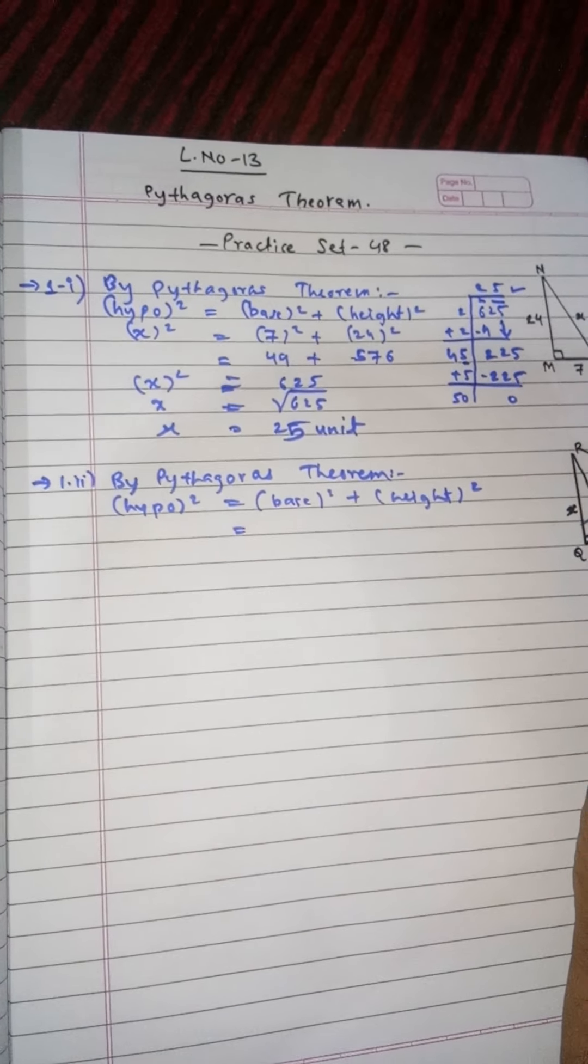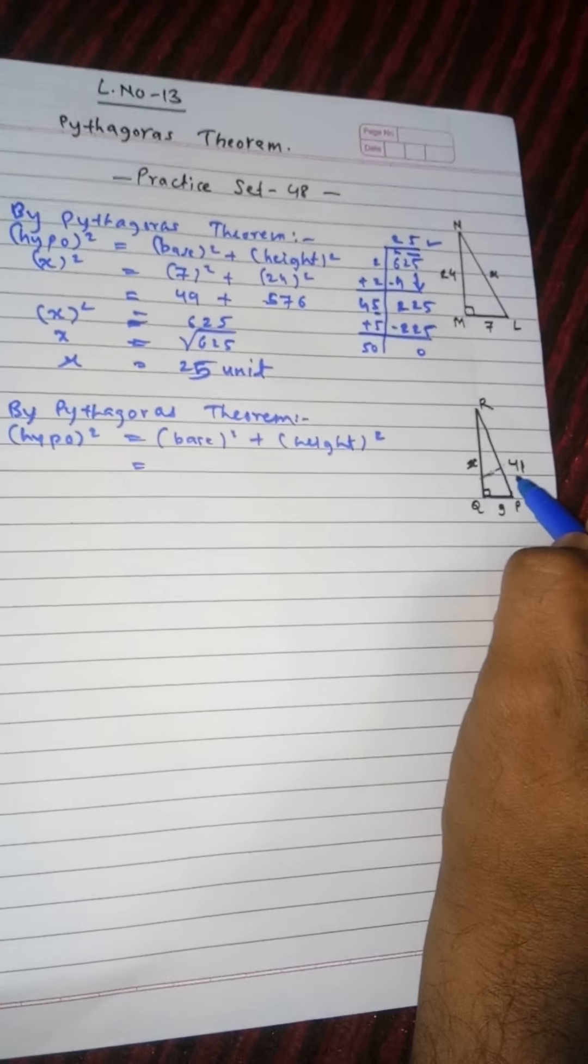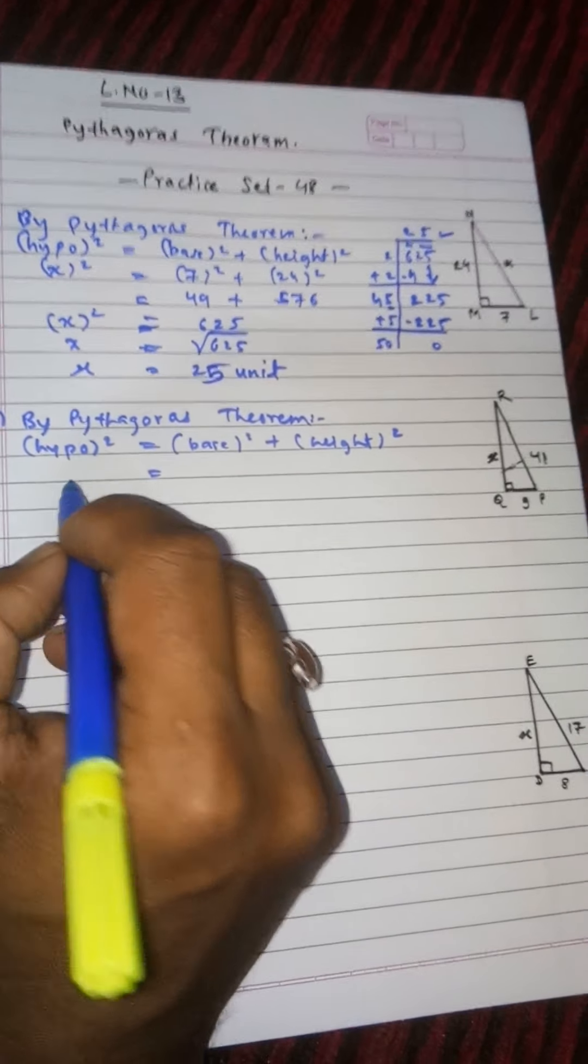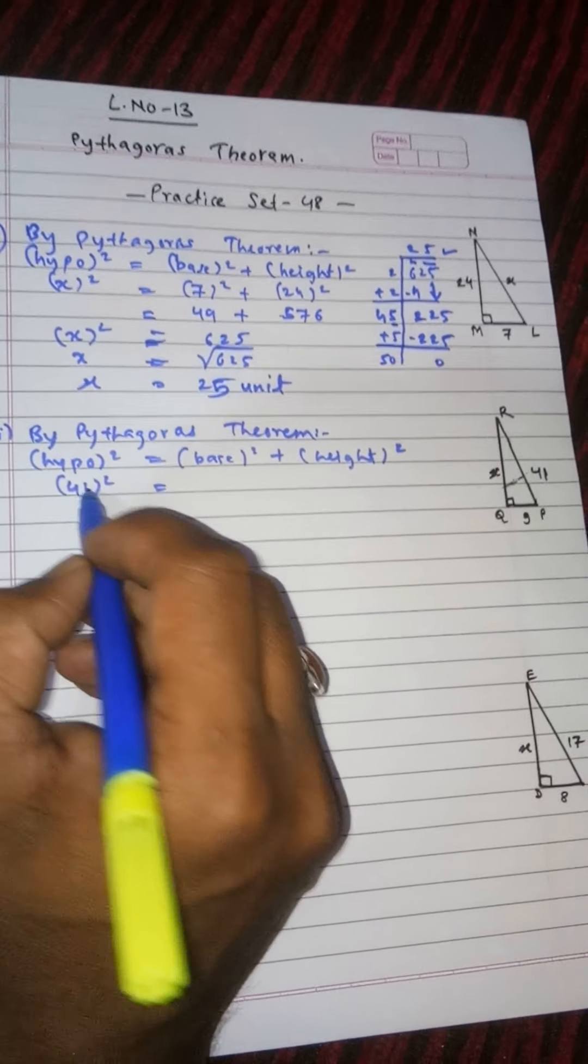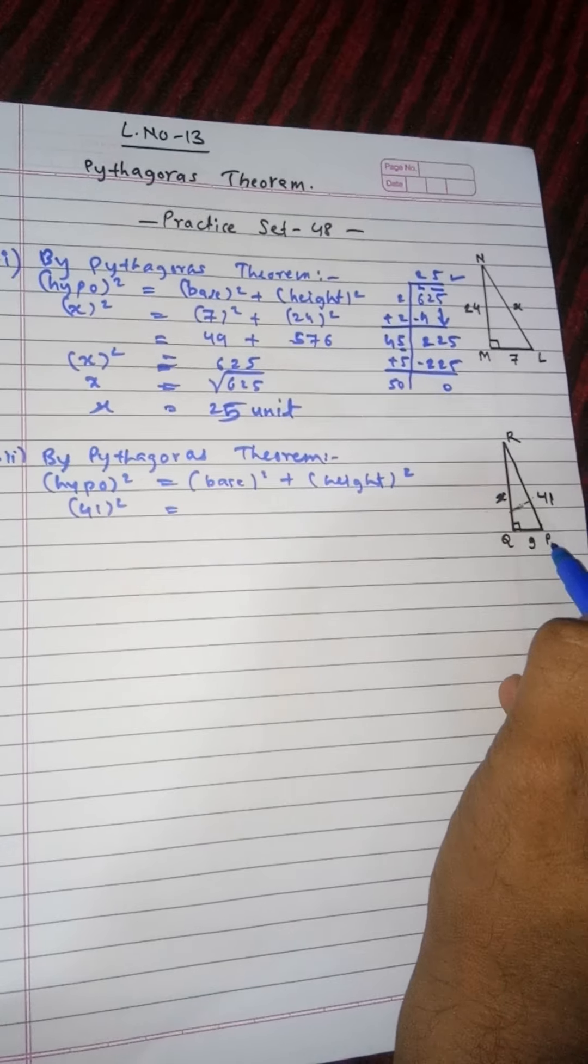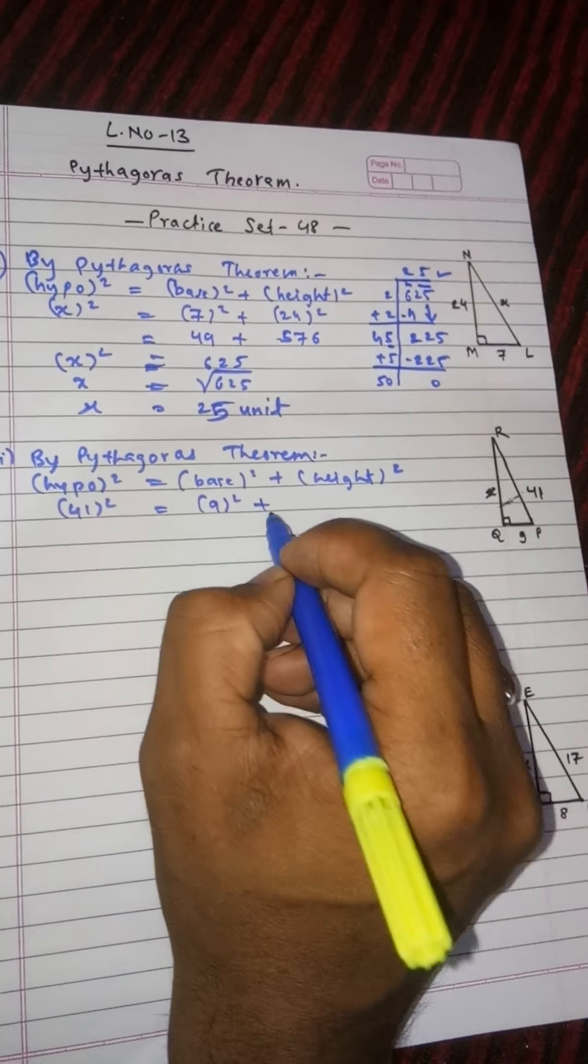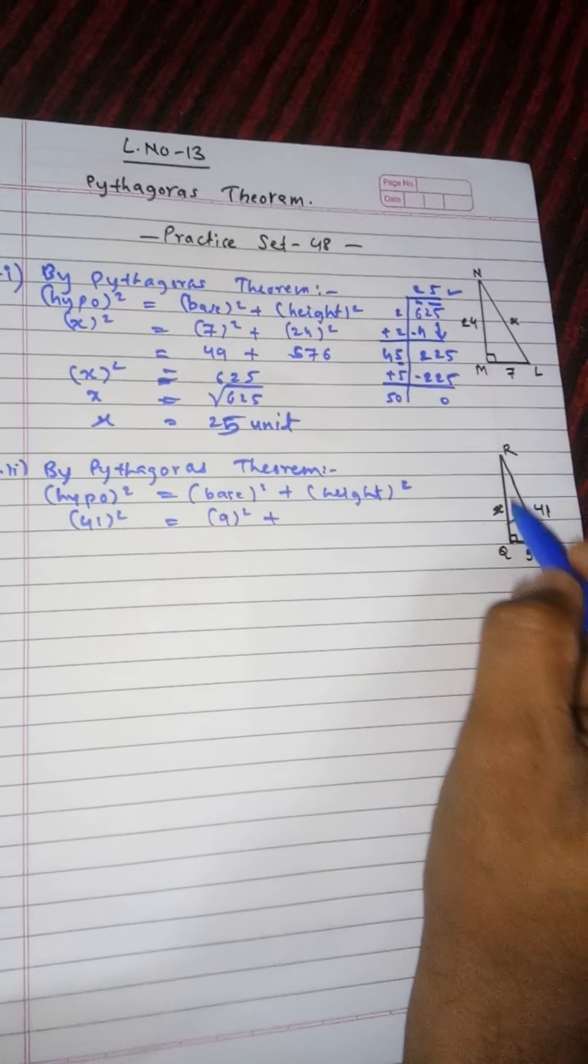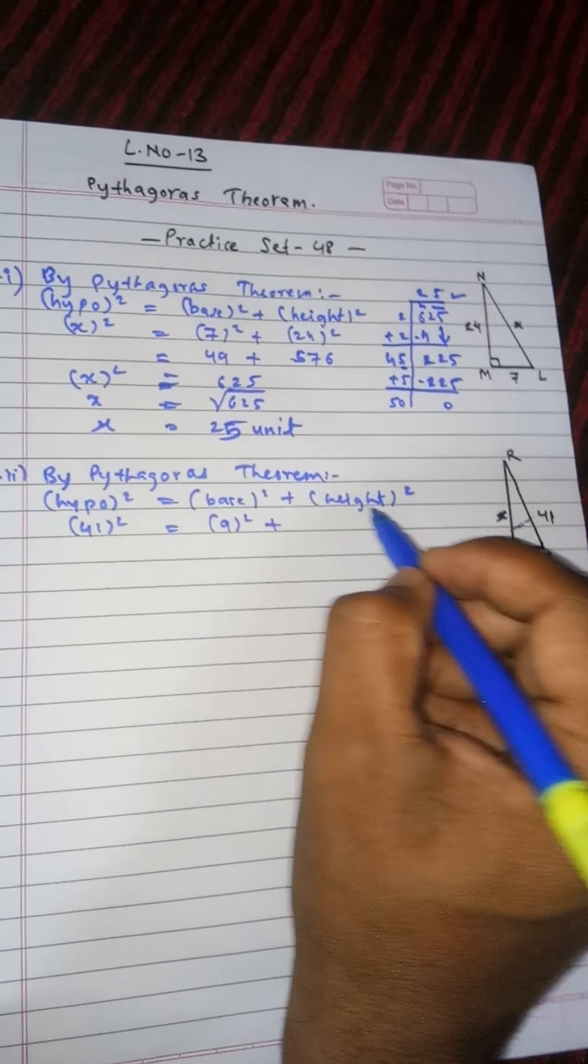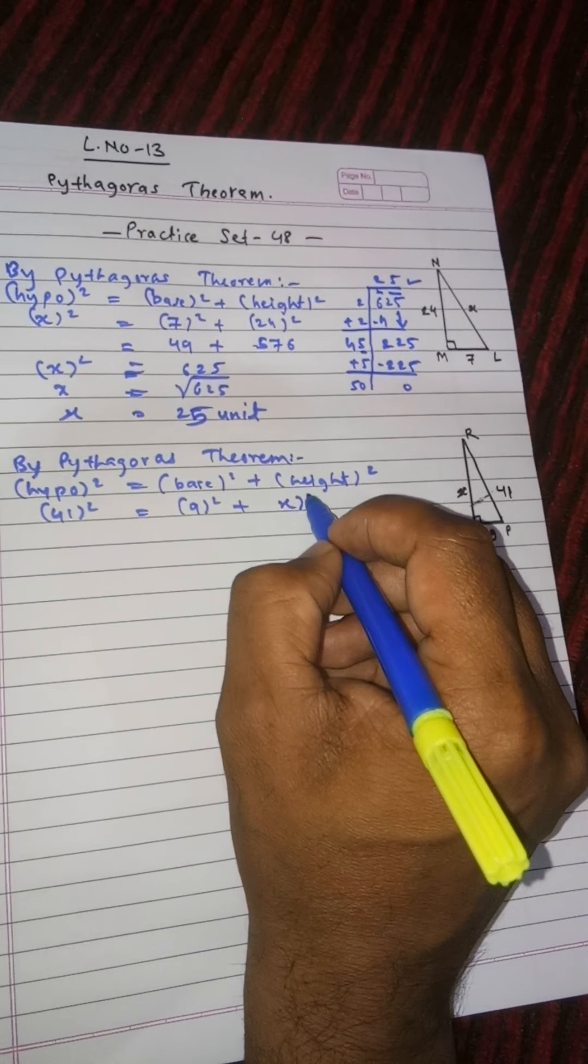Same, just write the formula then keep the value. Hypotenuse squared, the value of hypotenuse is 41, so write here 41 squared. Base is 9, so write here 9 squared, and height is x, so write only x squared.